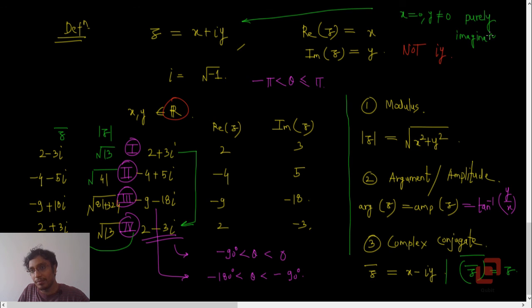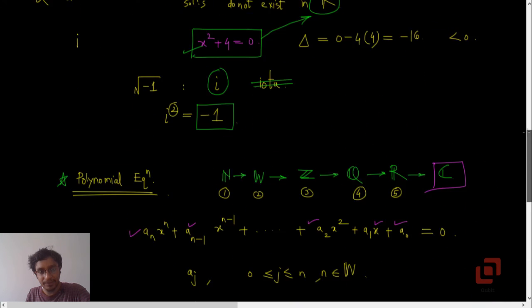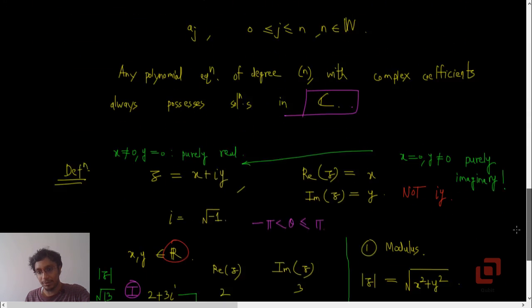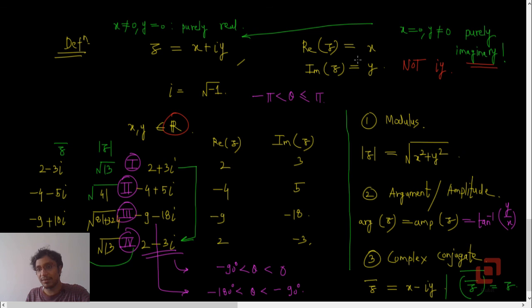Because its real part is zero. And if x is non-zero and y is zero, then it is purely real, or sometimes we just say it is real. So when y is zero, we get back our old numbers, the real numbers. But the moment you have a non-zero imaginary part, you have to jump to the set of complex numbers. So we have purely imaginary numbers, we have real numbers, and complex numbers—all of them belong to the set of complex numbers. So the general representation is x plus i y.